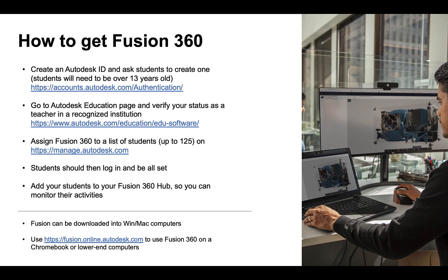How do you get Fusion 360 for students who are at least 13 years old? It's accessible on Windows or Mac computers and also on Chromebooks. First, create an Autodesk ID if you're a teacher, then ask students to create their own Autodesk IDs. Then go to the Autodesk Education page and verify your status as a teacher in a recognized institution. Assign Fusion 360 to a list of up to 125 of your students, and then the students should be all set to log in. You can also add them to your Fusion 360 hub so that you can monitor their activities.